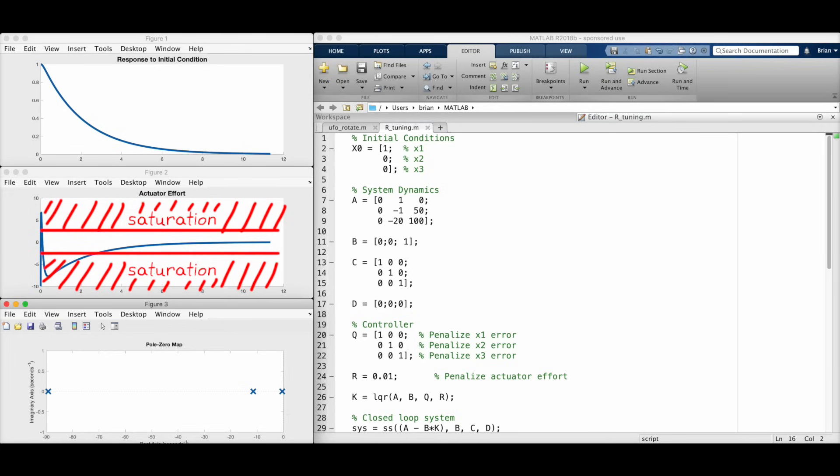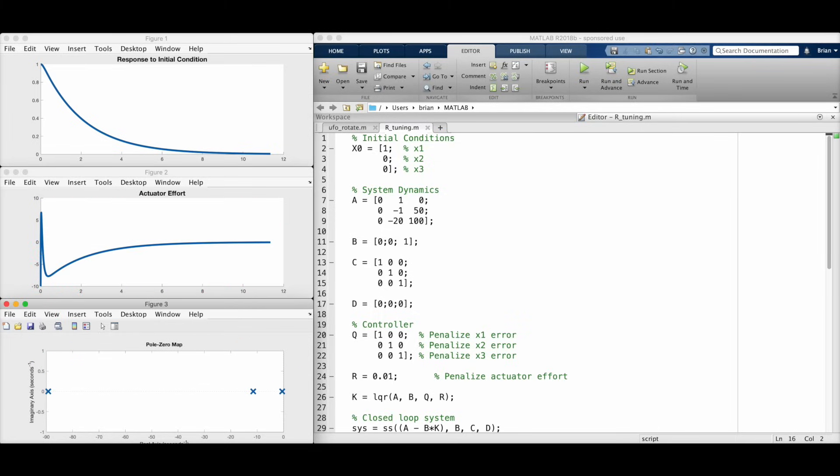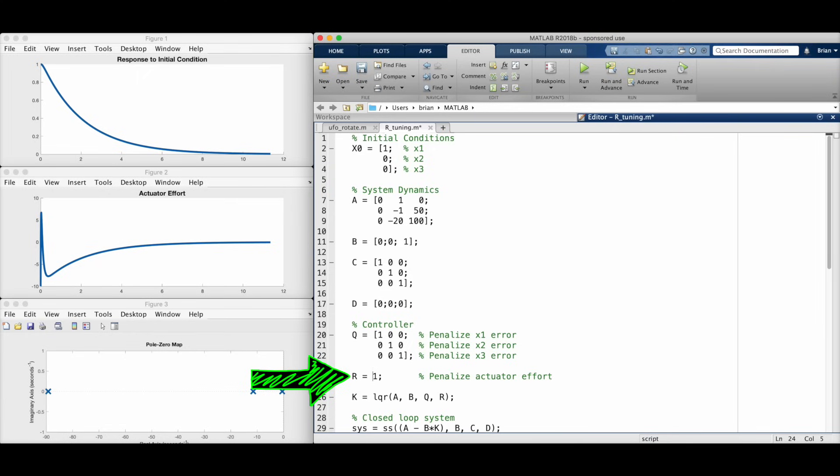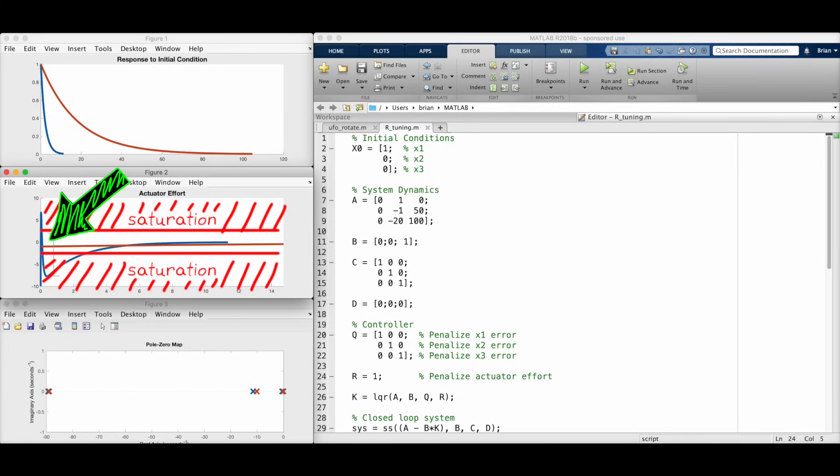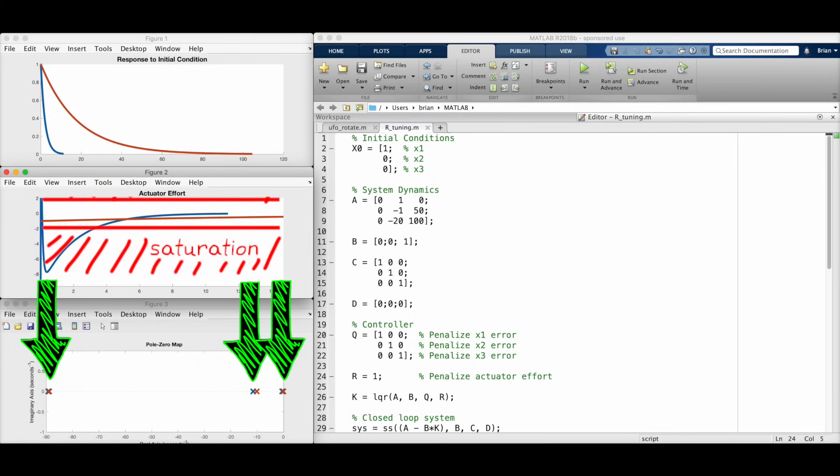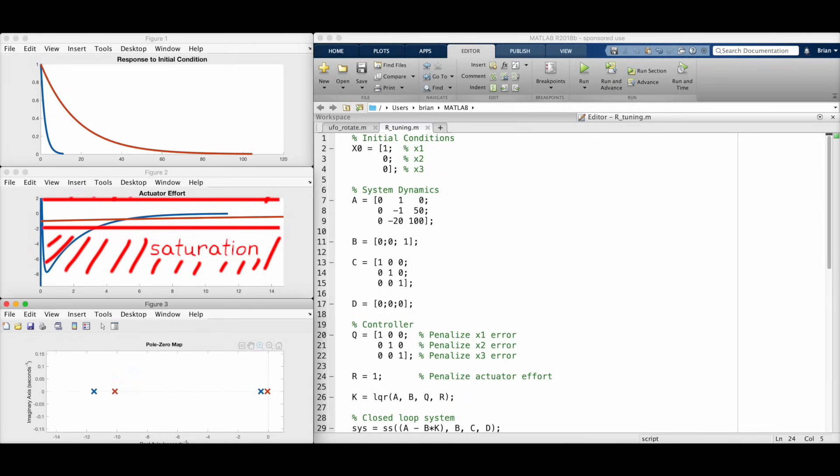Now, had we developed this controller using pole placement, the question at this point would be which of these 3 poles should we move in order to reduce the actuator effort. And that's not too intuitive, right? But with LQR, we can easily go to the R matrix and penalize actuator usage by raising a single value. And I'll rerun the script. We see that the response is slower as expected, but the actuator is no longer saturated. And check this out. All 3 closed loop poles moved with this single adjustment of R. So if we were using pole placement, we would have had to know how to move these poles just like this in order to reduce the actuator effort. And that would be pretty tough.